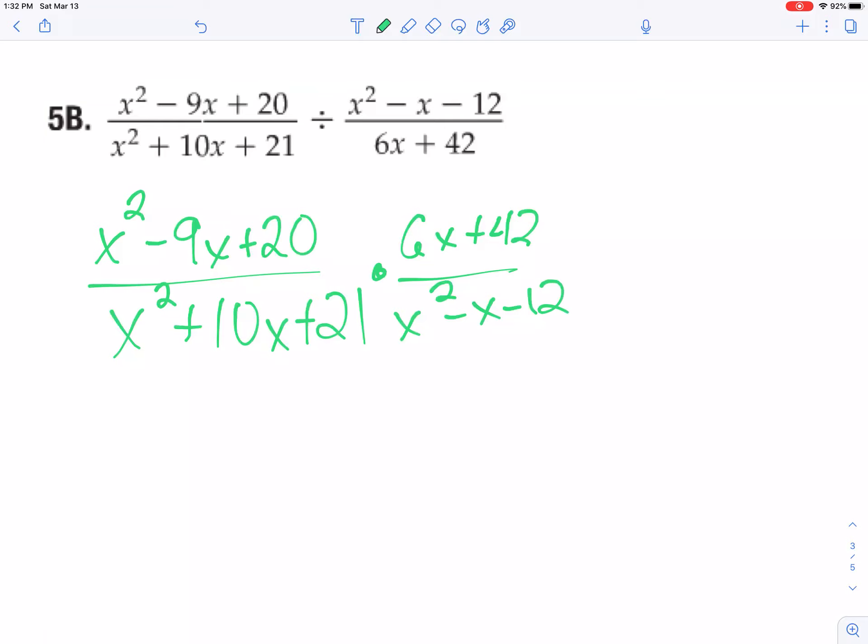So what I want to do next is go back to those steps from the first page, factor the top, factor the bottom on both equations. On the first one I'm saying I think that's going to be x minus 4 and x minus 5 because negative 4 times negative 5 is a positive 20. If I add them together that's negative 9.